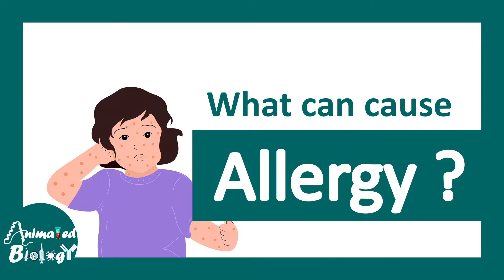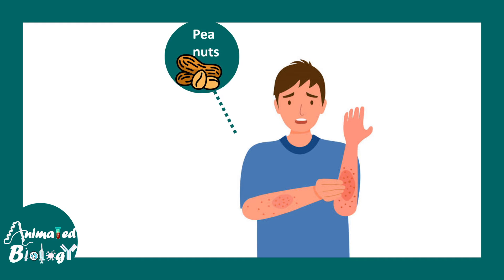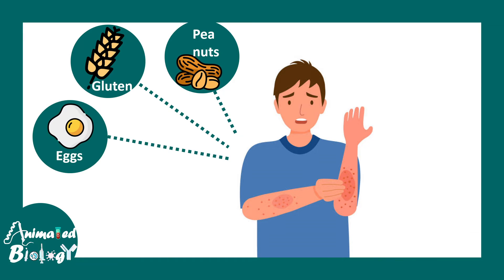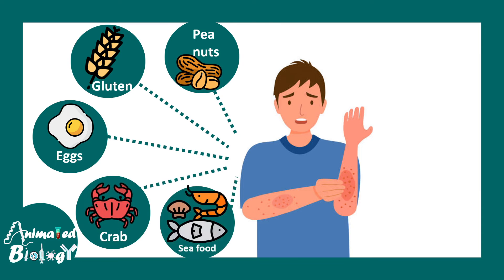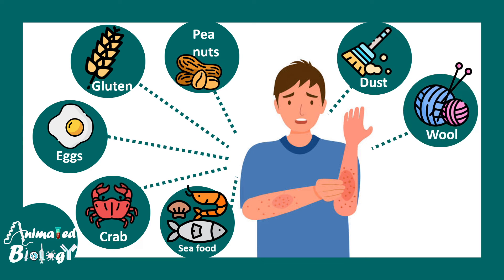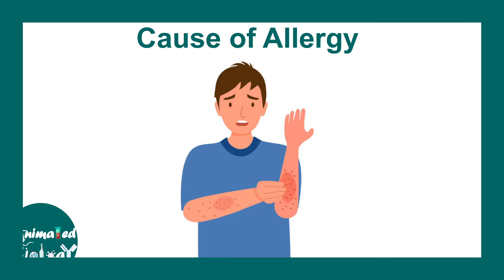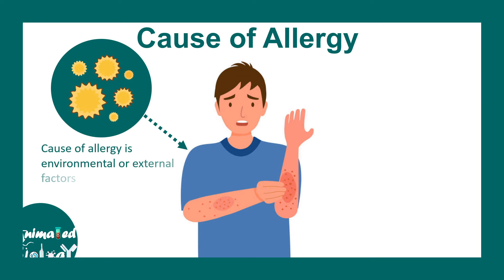So what really causes allergy? People are allergic to many things such as food items like peanut, gluten, eggs, crabs, or seafood. Sometimes, apart from food items, people are also allergic to dust, wool, or insect stings. Allergy could be caused due to many reasons. Anything that causes allergy is known as an allergen.